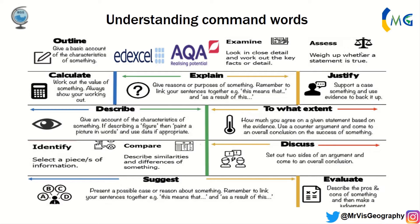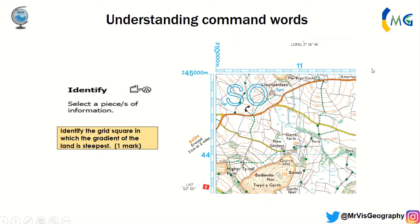The first word we're going to look at is 'identify.' When you identify, you need to select a piece of information and provide that. Identify questions are usually always one mark because they tend to be really straightforward. For example: identify the grid square in which the gradient of the land is steepest. You know that the closer the contour lines are together, the steeper the land.